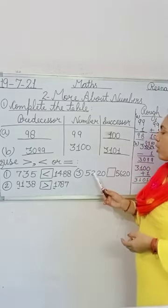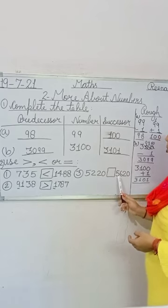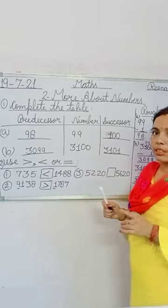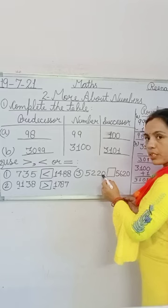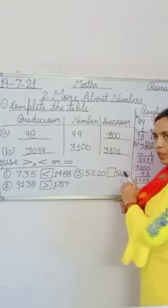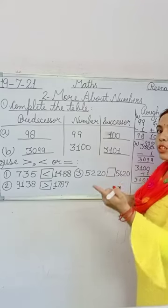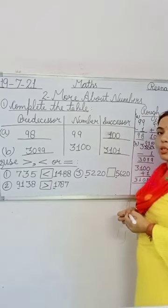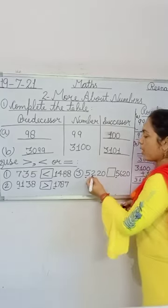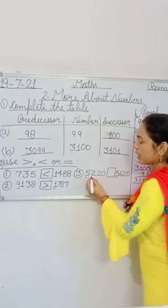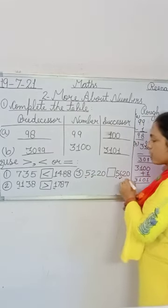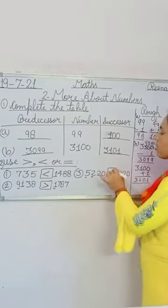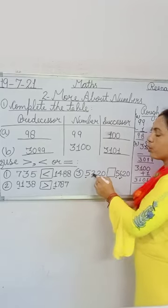In the third comparison, you have 5220 and 5620. Both have four digits. We compare the thousands place: both have 5. Since thousands digits are equal, we compare the hundreds place — third digit. Here it is 2 on the left and 6 on the right. Since 6 is greater than 2, the whole number 5620 is greater than 5220.